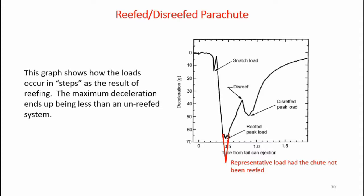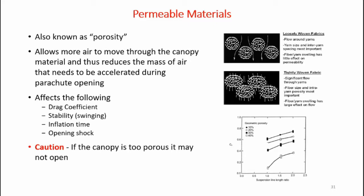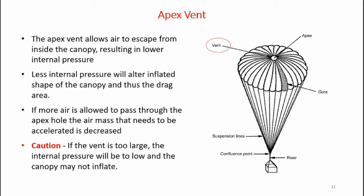Here's a graph showing the loads during a reefed and disreefed parachute. We see the parachute deploys, goes down to its reefed state — which is partially held closed — then disreefs, and we see the various loads during those phases. Without the reefed parachute, we would see a much higher load as represented by the red line. Porous materials — also known as porosity — allow more air to move through the canopy, thus reducing the mass of air that needs to be accelerated during parachute opening. Porosity also affects the drag coefficient, stability, inflation time, and ultimately the opening shock. Caution must be taken because if a canopy is too porous, it may not open. The apex vent — a hole in the top of the canopy — also allows air to escape from inside, resulting in lower internal pressure and less mass that has to be accelerated. However, if the vent is too large, the internal pressure may be too low and the canopy may not properly inflate.